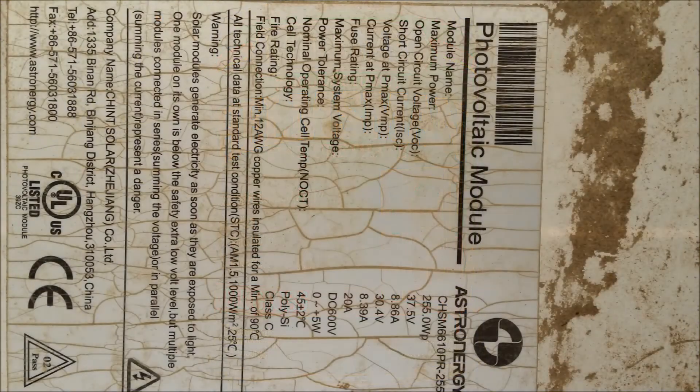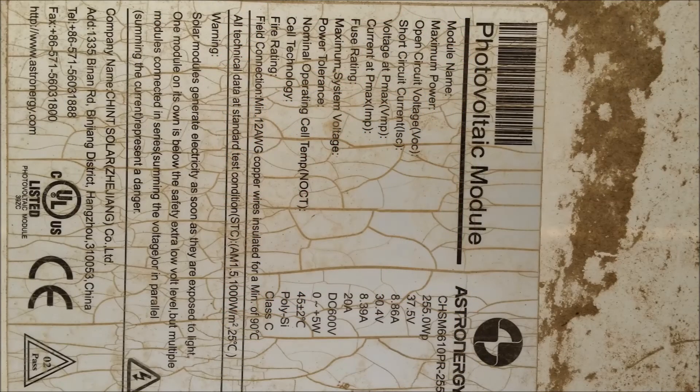So this is the nameplate of the solar panel. It's a 255 watt panel. The open circuit voltage is about 37.5 volts and the short circuit current is about 8.86 amps. So this is what I'm basing all my measurements on.